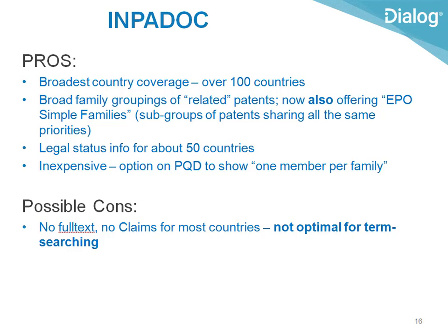Impadoc is not optimal for term searching, because it doesn't have full text and for most countries it doesn't have the claims. It's a great database if you're searching by company name or by class numbers. It can also be very cost effective, because once you've done your search, you can either download all the patents you get, or reduce results to just one patent per family by clicking a button.